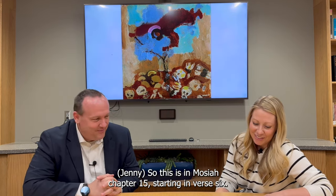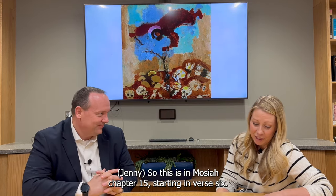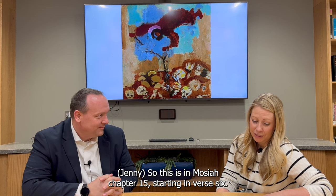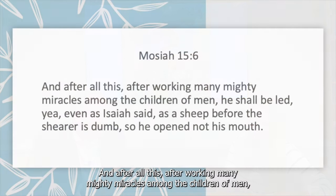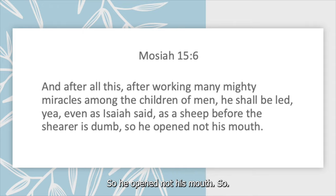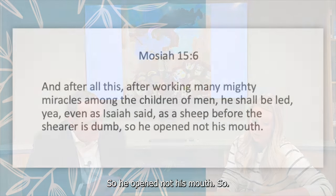So this is in Mosiah chapter 15, starting in verse 6: 'And after all this, after working many mighty miracles among the children of men, he shall be led — yea, even as Isaiah said — as a sheep before the shearer is dumb, so he opened not his mouth.'